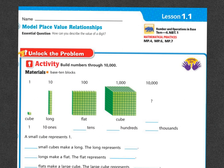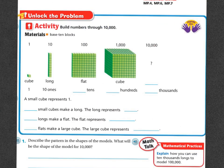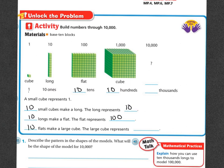Our materials are going to be the base ten blocks. We have our cube which is going to represent one, our long which is going to represent ten, our flat which is going to represent a hundred, and then our cube which will represent a thousand. Ten small cubes makes the long and the long represents ten, ten longs makes a flat and that represents a hundred, and ten flats makes a larger cube and that cube represents a thousand.